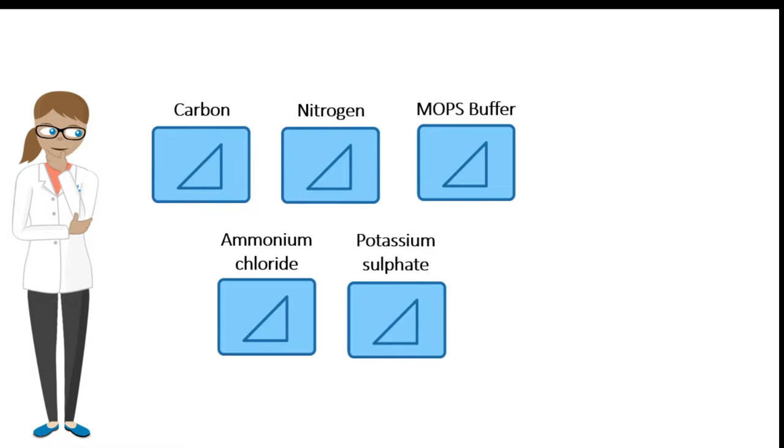As an example, let us say that Anna has determined five different continuous factors she would like to investigate based on existing literature: amount of carbon, nitrogen, MOPS buffer to regulate pH, ammonium chloride, and potassium sulfate. There is only one response, bacterial growth, which is expressed as a change in the optical density, or OD, after 24 hours.